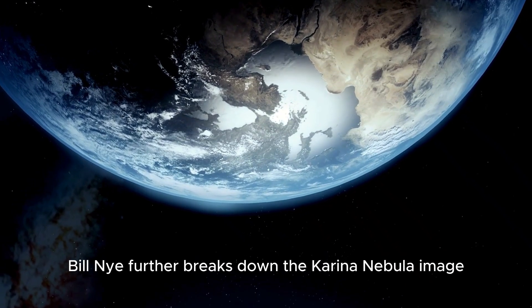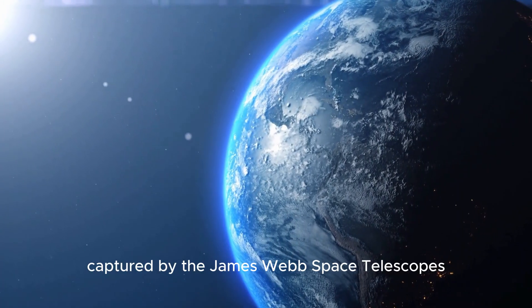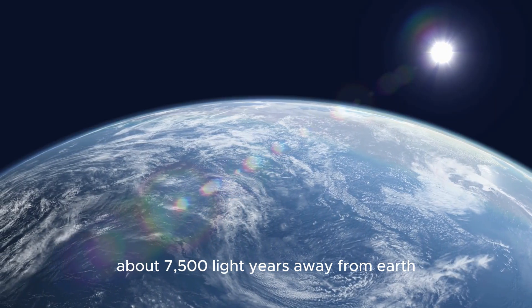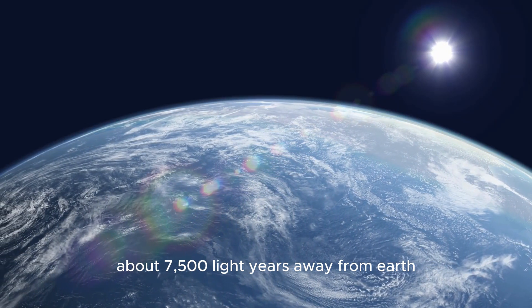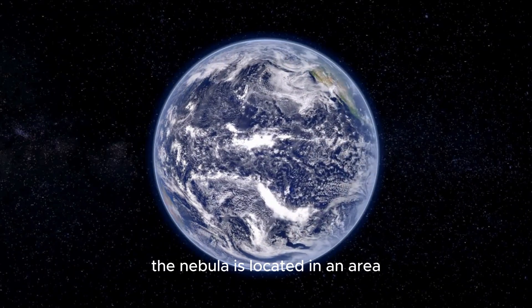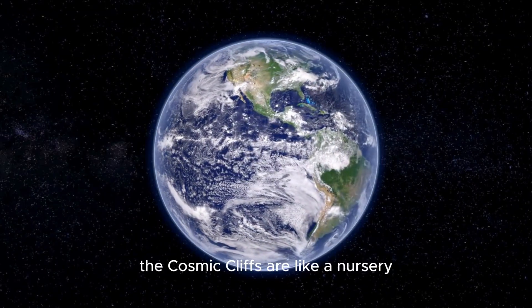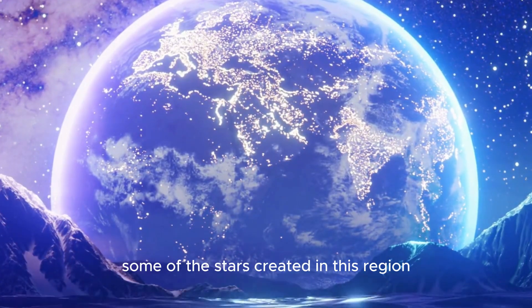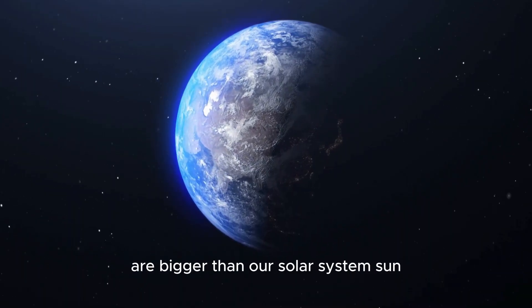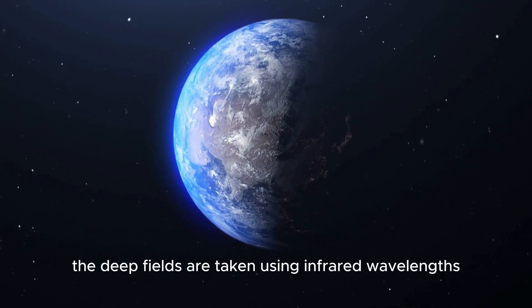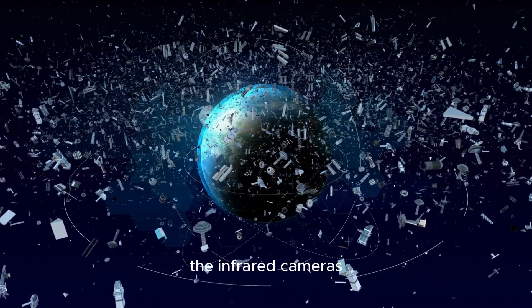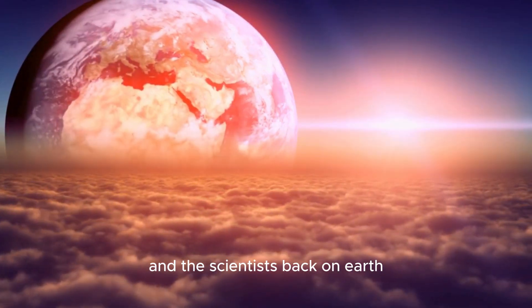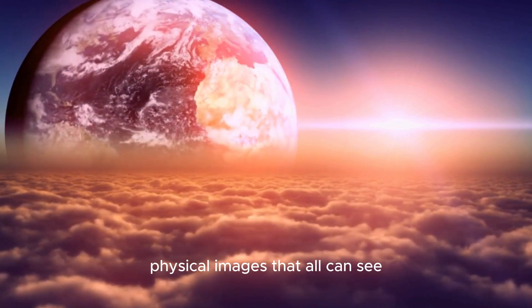Bill Nye further breaks down the Carina Nebula image captured by the James Webb Space Telescope's near-infrared camera. The Carina Nebula is located about 7,500 light-years away from Earth. The Nebula is located in an area known as the Cosmic Cliffs. The Cosmic Cliffs are like a nursery where young stars are born. Some of the stars created in this region are bigger than our solar system's sun. The deep fields are taken using infrared wavelengths. The infrared cameras detect these otherwise invisible objects in infrared, and the scientists back on Earth convert the data into clear physical images that all can see.